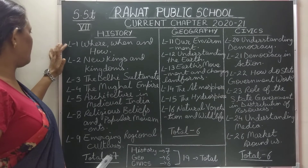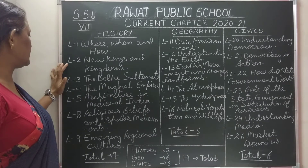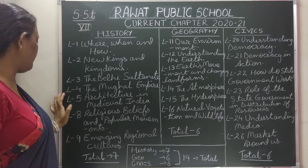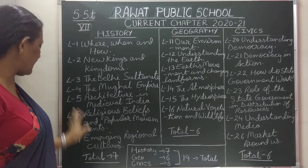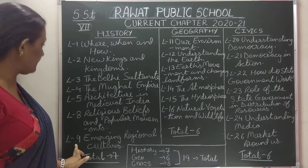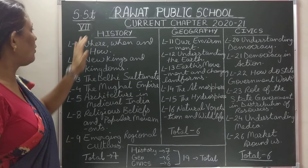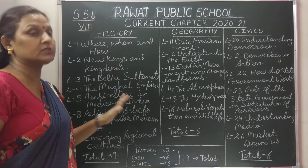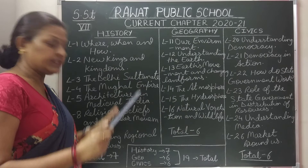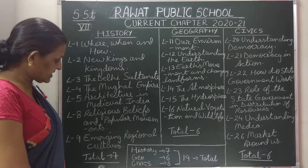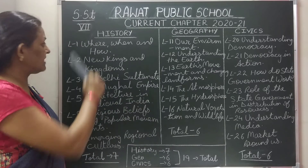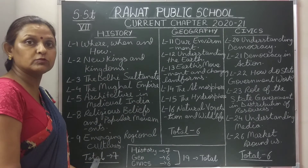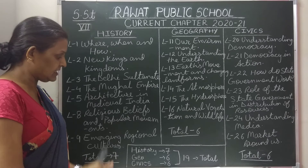These are lesson numbers 1, 2, 3, 4, 5, 8, and 9 of history we are going to study this year. So total chapters are 7 in history that we are going to study this year.